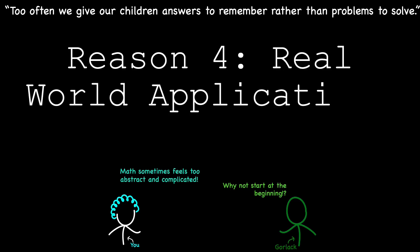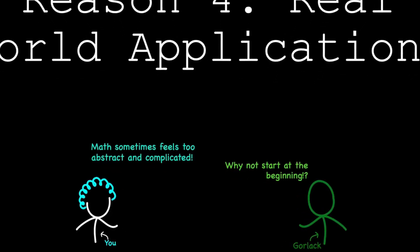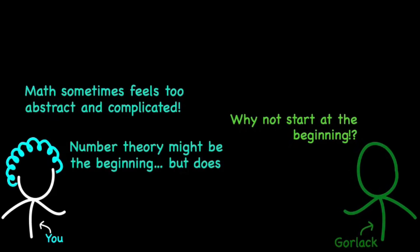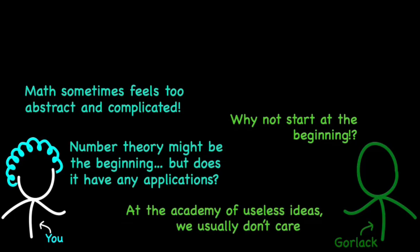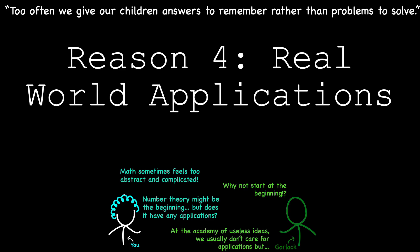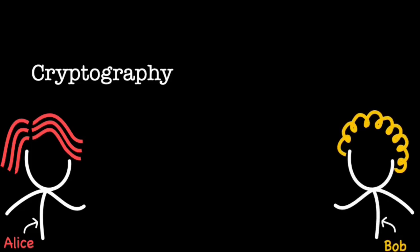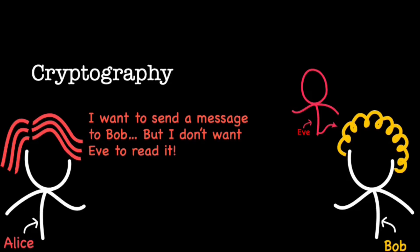Reason 4: Real-world applications. At the Academy of Useless Ideas, we often revel in the abstract and the theoretical. But let's not kid ourselves. There is more to number theory than just elegant proofs and mind-bending puzzles. The truth is, number theory has some pretty significant real-world applications that prove it's not just for math nerds. Take cryptography, for instance. The art of encoding and decoding information relies heavily on number theory. Whether you are securing online transactions or keeping your personal data safe from prying eyes, number theory is the unsung hero behind modern encryption techniques. Without it, your online shopping might be a lot less secure.